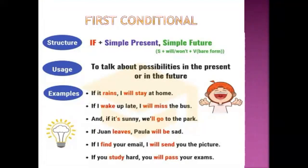A conditional sentence consists of two parts: a main clause and a condition clause. In the condition clause: if plus present simple. In the main clause: subject plus simple future — subject plus will plus bare infinitive. We use this to talk about possibilities in the present or in the future. If it rains, I will stay at home.